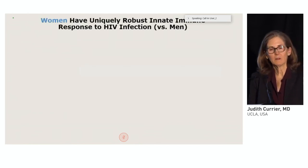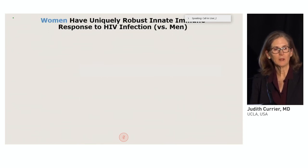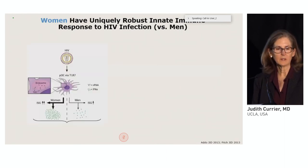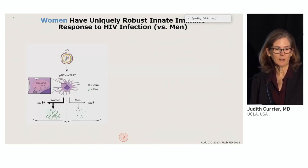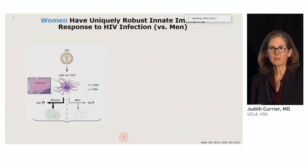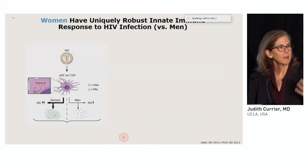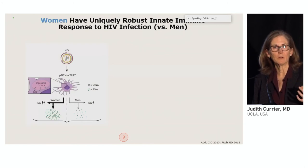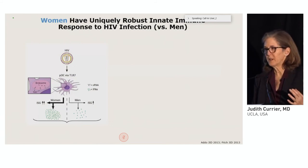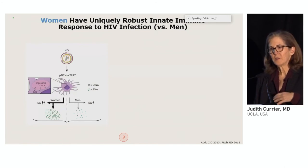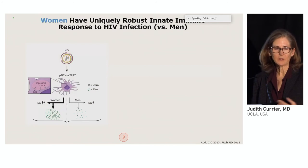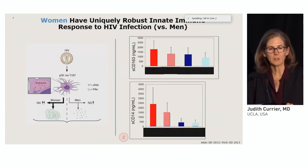A key area of research has been understanding that women have a uniquely robust innate immune response to HIV compared to men early in disease. After exposure to the virus, the production of interferon and interferon-sensitive gene expression is higher in women than in men. That's part of the reason why viral load may be lower early in disease in women. But this may go on untamed, with long-term consequences in terms of excess immune activation and inflammation.